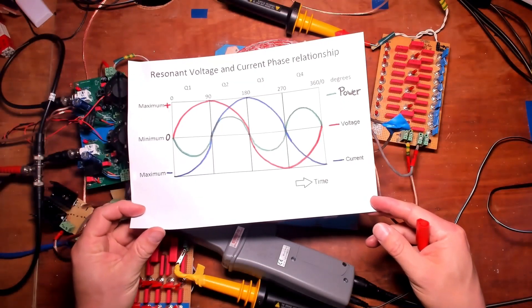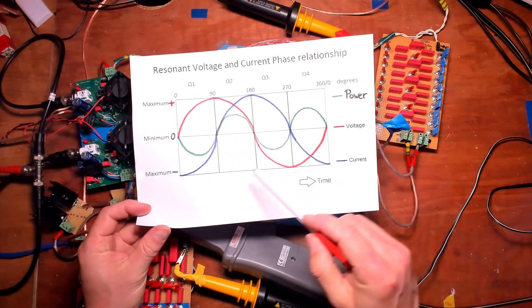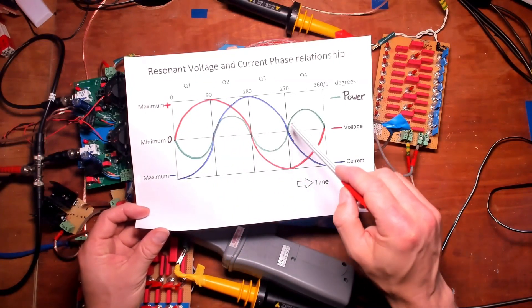Here again is the phase relationship between the red voltage, the blue current, and the power cycle that it generates.